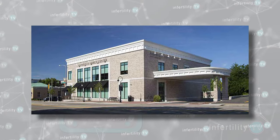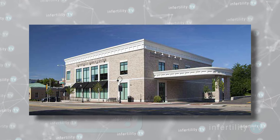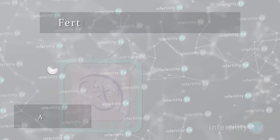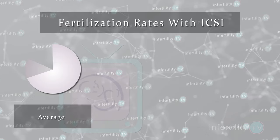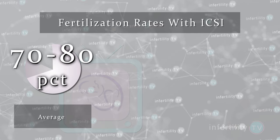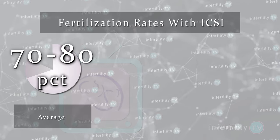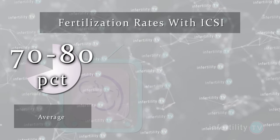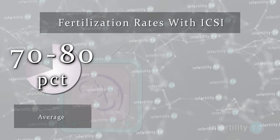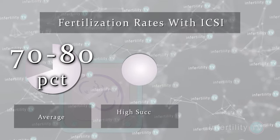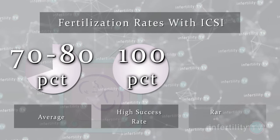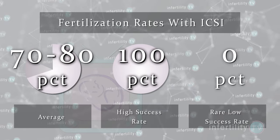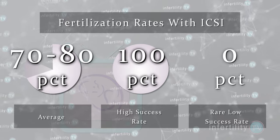At IVF1, where we use ICSI for all of our IVF cases, we see about 70-80% of the eggs we inject will fertilize. This is an average. We have seen some instances of 100% fertilization and some instances, although rare, of 0% fertilization.